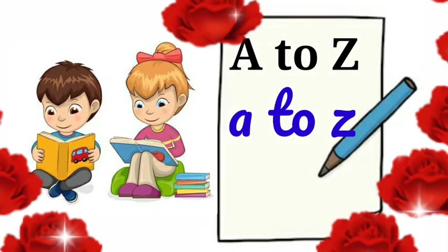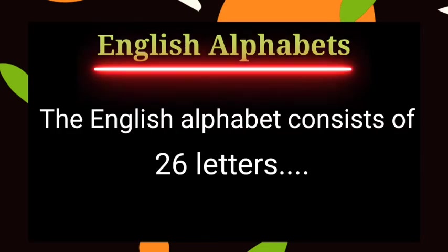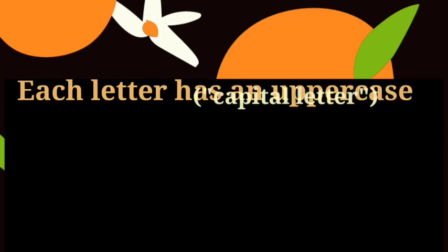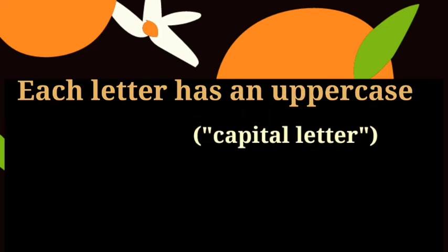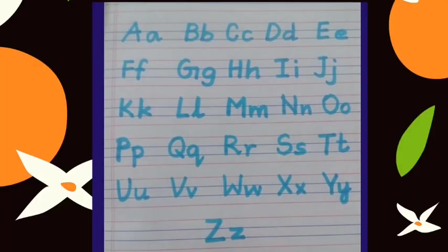Hi kids, today we learn A to Z English alphabets. The English alphabet consists of 26 letters. Each letter has an uppercase, that is capital letter, and a lowercase small letter. Let's see alphabets: A, B, C, D, E, F.